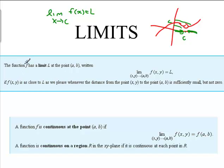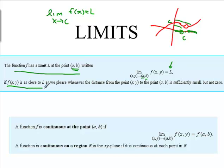Similarly, in two dimensions, we say that the function f(x, y) has a limit L at the point (a, b) — so now we've got a function in terms of two variables — as x approaches a and y approaches b. The limit exists if f(x, y) gets really close to L whenever (x, y) gets really close to the point (a, b). In other words, as x gets close to a and y gets close to b, our function must get close to one value.